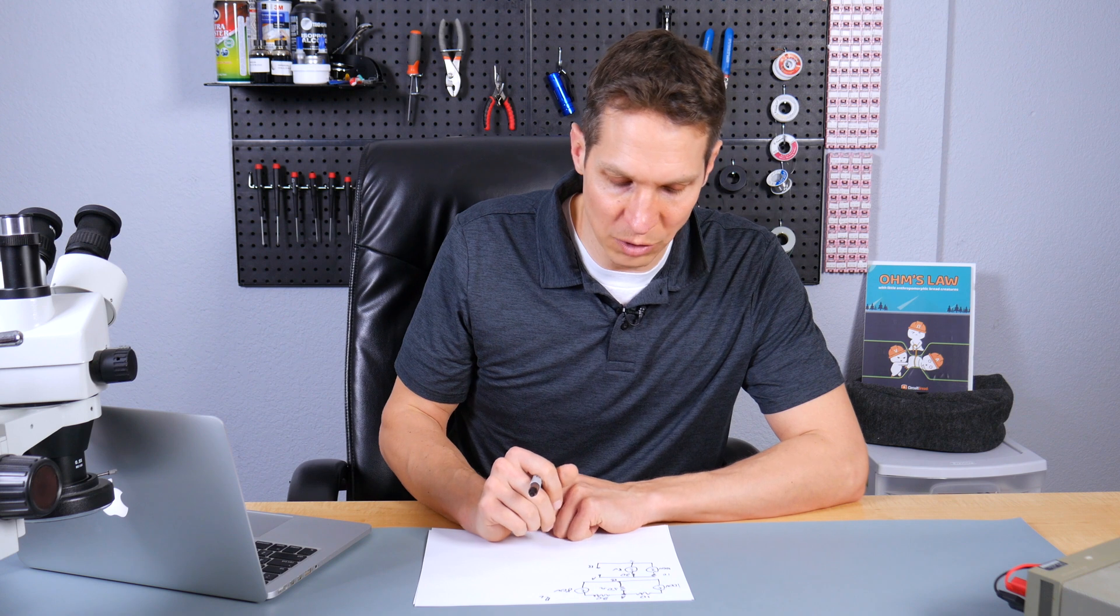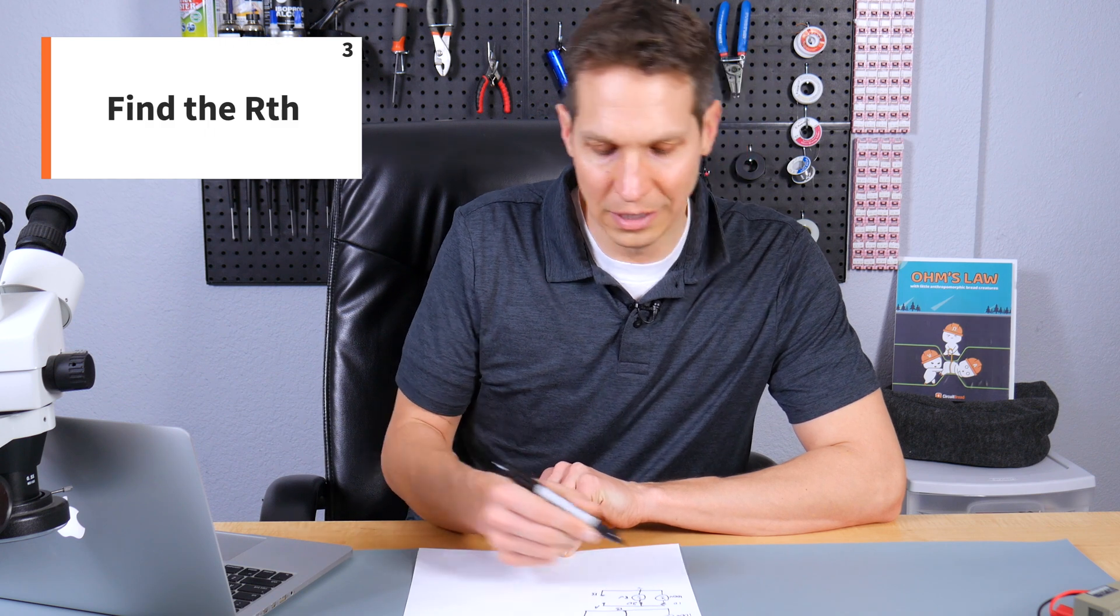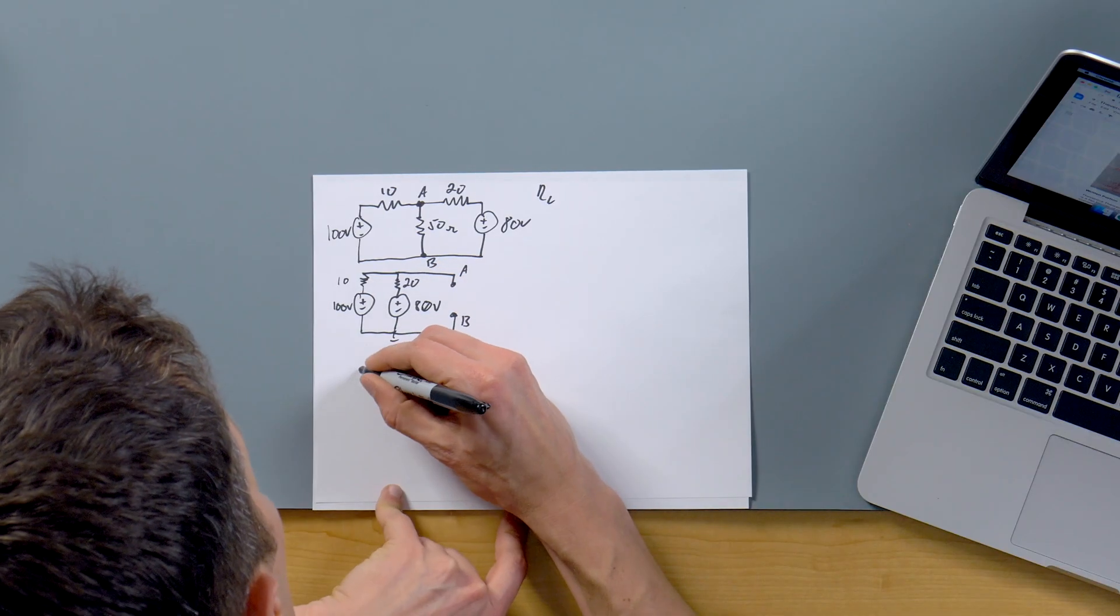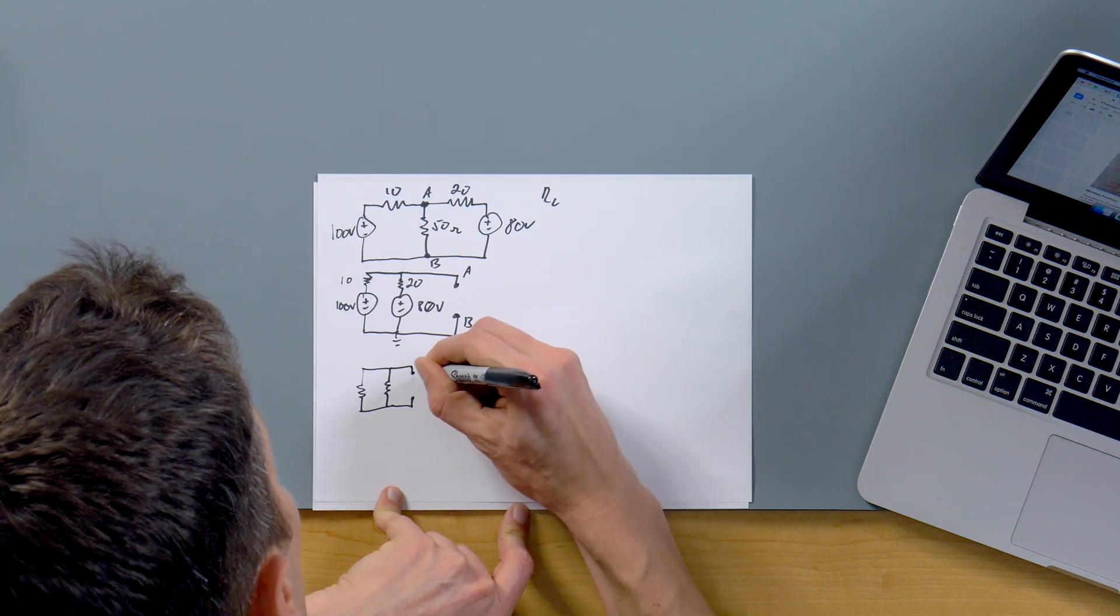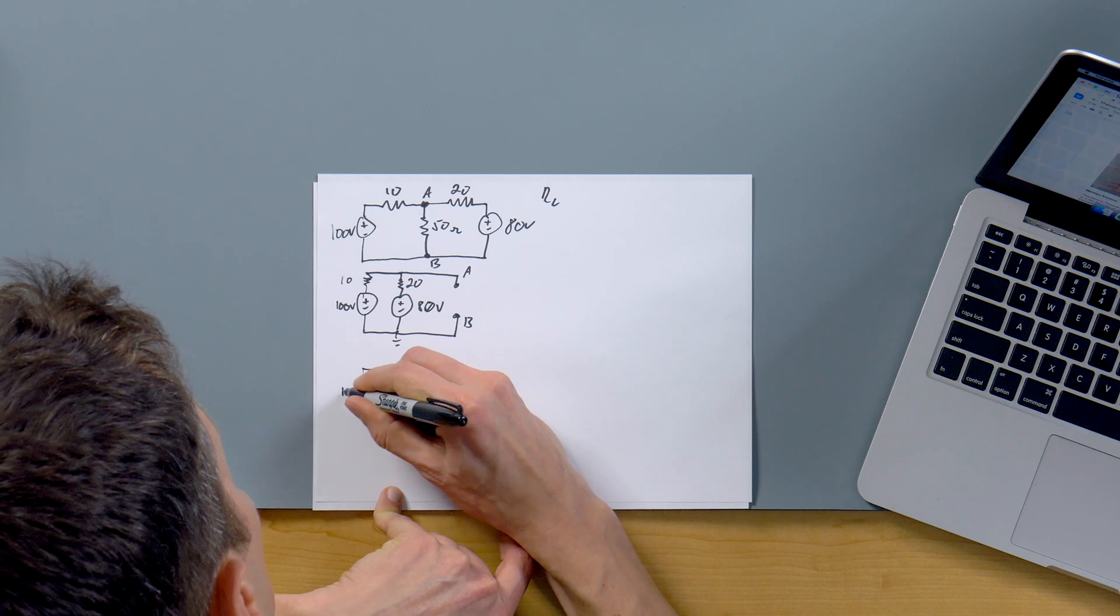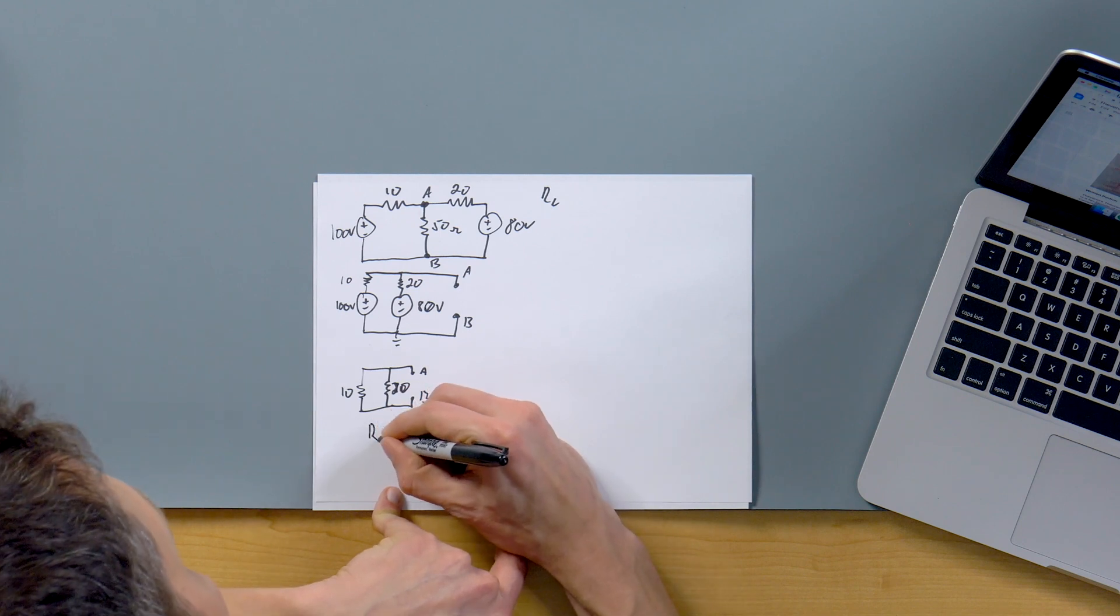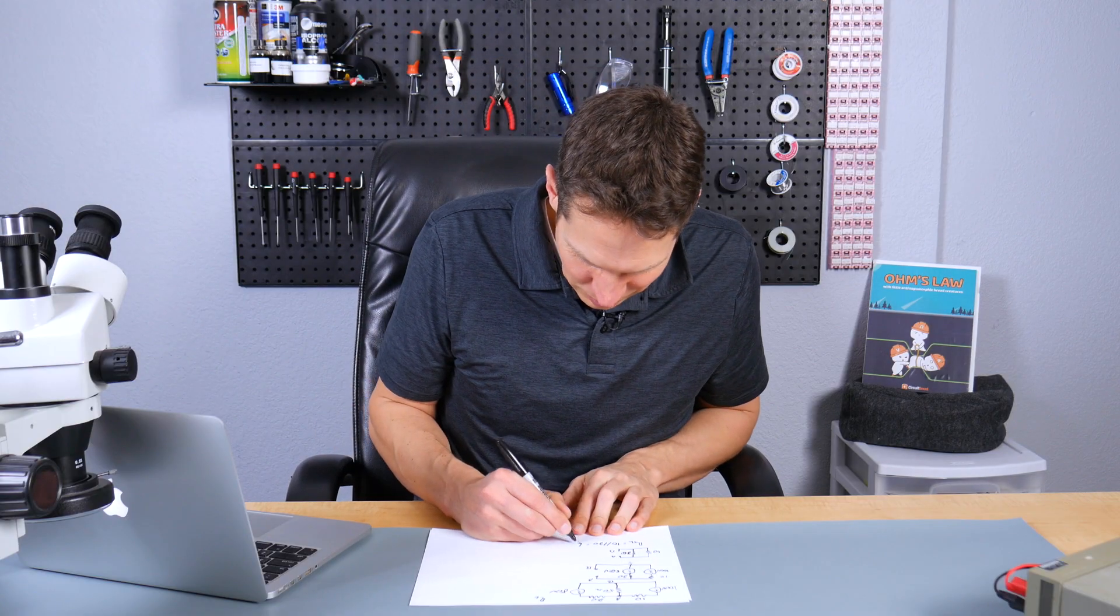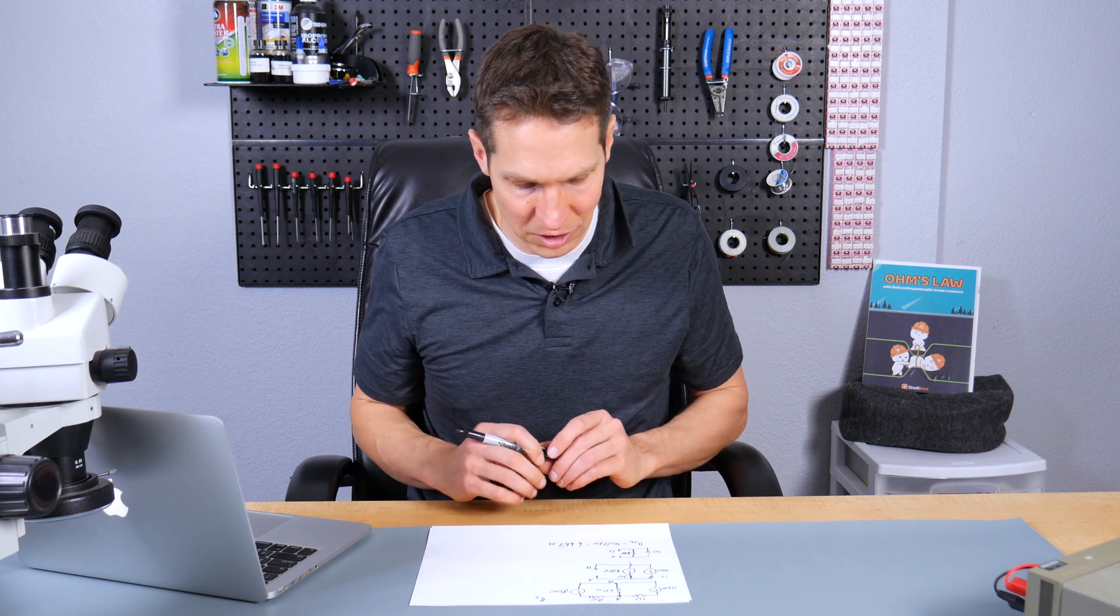Okay, so we've done number two, and we have removed that load. Now number three. So number three is going to be to remove our power sources and find out the equivalent resistance. So in this case, now that 100 volts and that 80 volts, they turn into shorts. So here we have those, and then we come up here, A, B, 80, 100, oh, dang it, 20, excuse me, 10. And this time, since those two are sharing nodes, those are actually in parallel. So R Thevenin is 10 ohms in parallel with 20 ohms. And that comes out to 6.667. I don't need that many significant digits. So that is our R Thevenin.